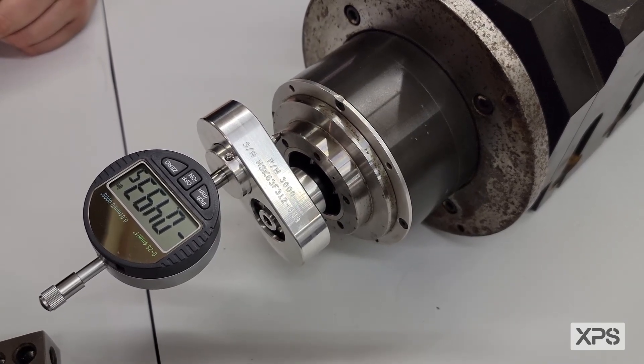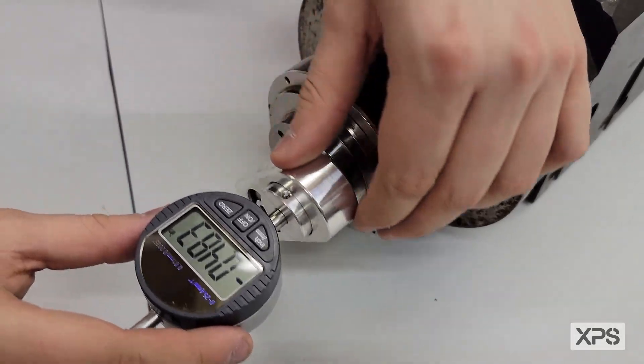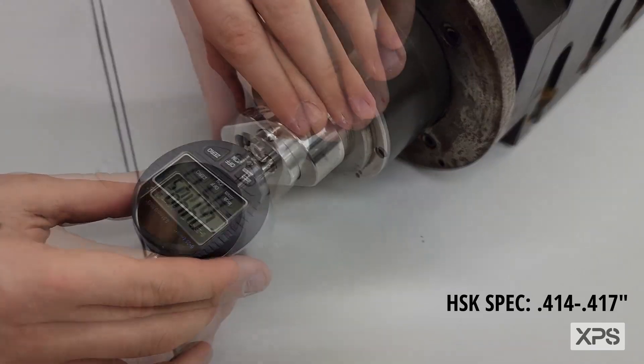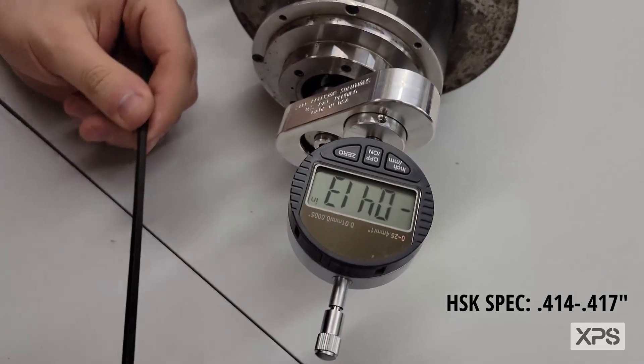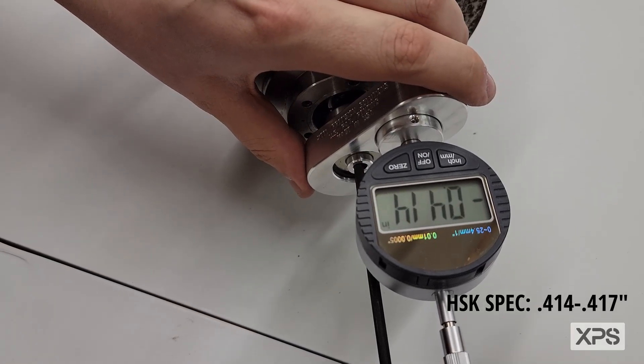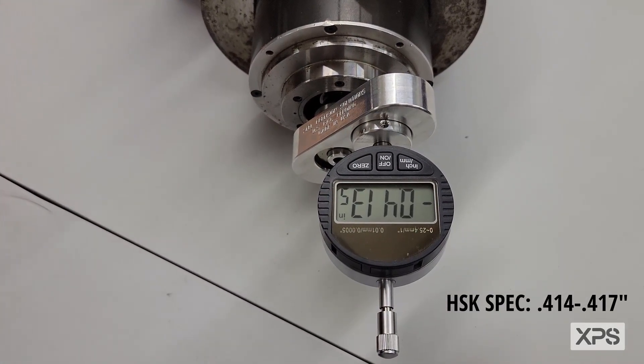you're going to turn it clockwise or counterclockwise, whatever way is needed to get it within spec. So right now we have 413 thousandths. We're going to take our 4 millimeter Allen wrench, tighten the set screw while holding it at the spec we need. Our spindle is set at 413 thousandths.